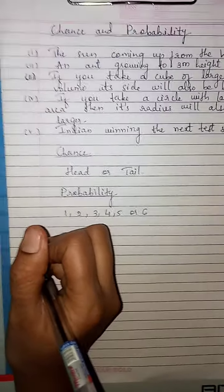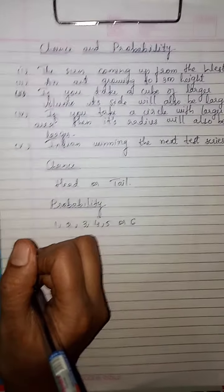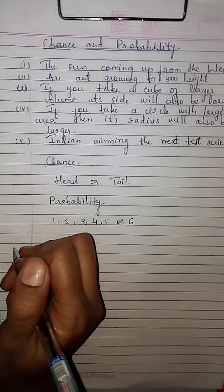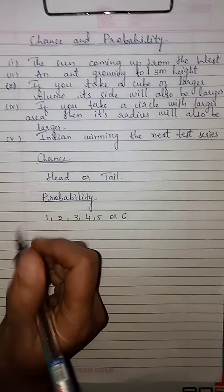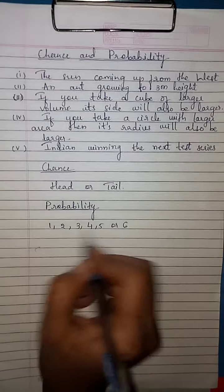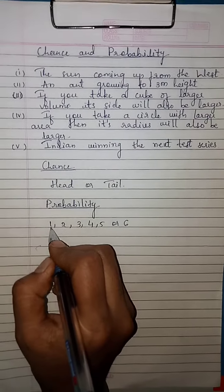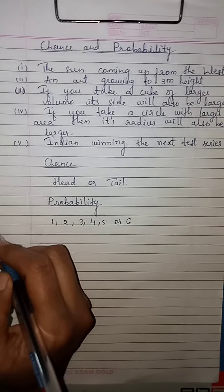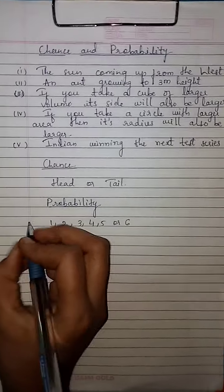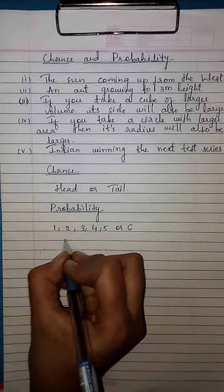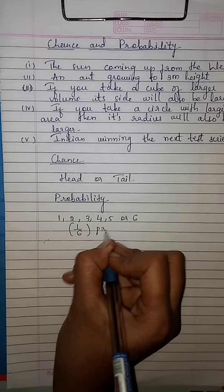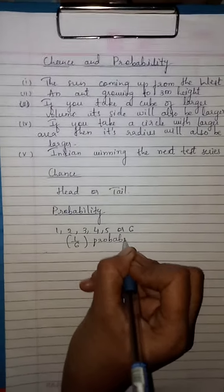In a die, when you are playing snake and ladders or Ludo, you use a die that has six faces numbered 1 through 6. Each face has a one-sixth probability of appearing.